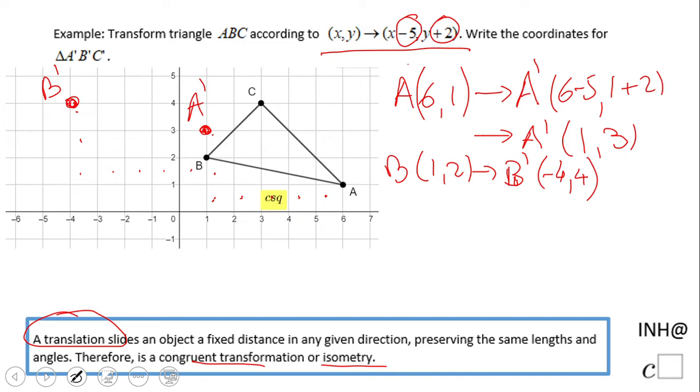What about the last one, C? The coordinates of point C are three and four. So C prime, we're gonna take away five. Three minus five, that is negative two, and four plus two, that is six.